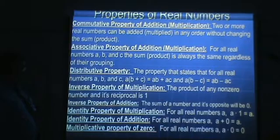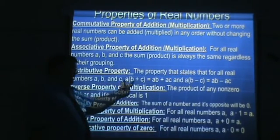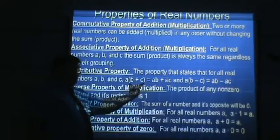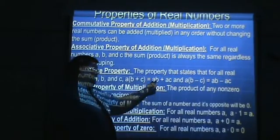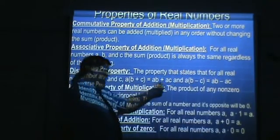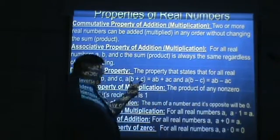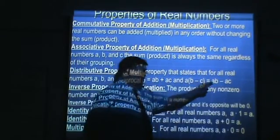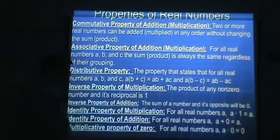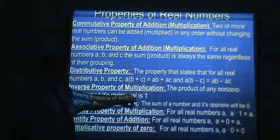Distributive property: the property that states that for all real numbers A, B, and C, if you have A times the quantity B plus C, that's equal to A times B plus A times C, adding those two together. It's the same whether you have A times the quantity B plus C or B minus C — you can still work that same distribution. The inverse property of multiplication is the product of any non-zero number and its reciprocal is 1.